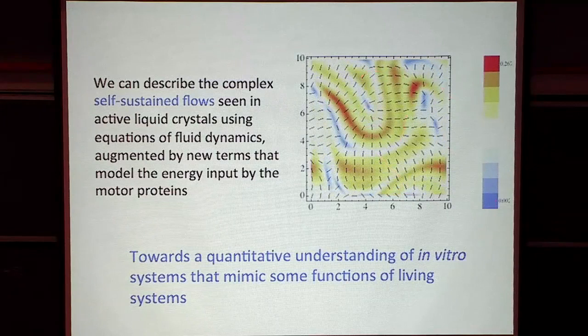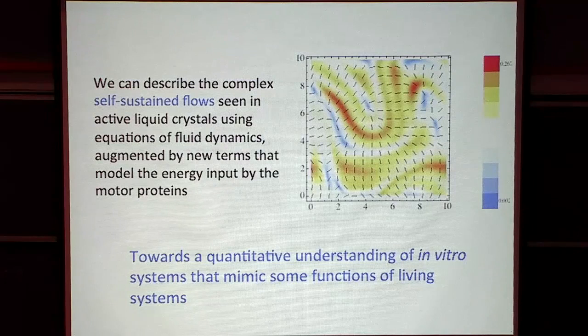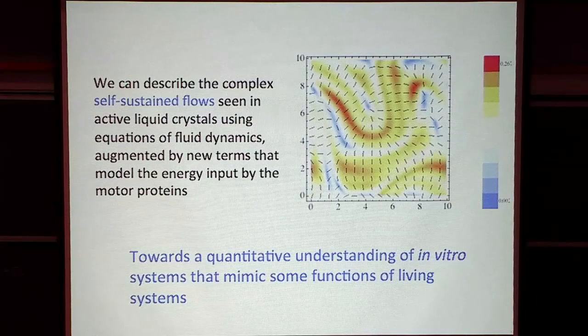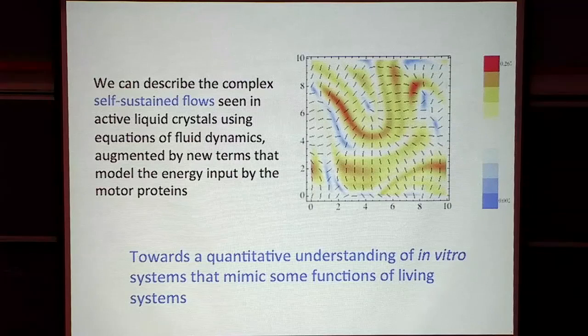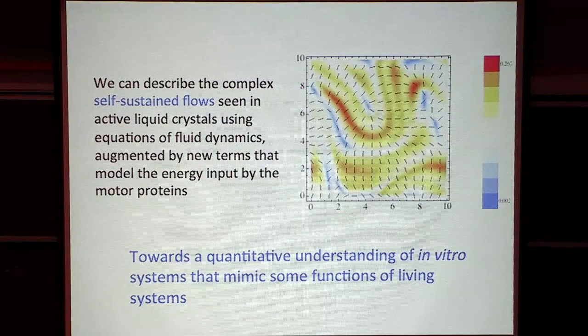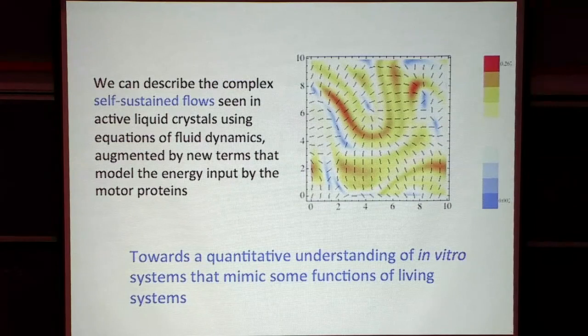Why are we doing this? The experiment and this kind of theoretical work is trying to get a quantitative understanding of things that characterize living systems — such as spontaneous motion. By combining experimental and theoretical studies, we are trying to take apart the cell and reproduce some of what it does in vitro. If we do it in this controlled way, we might provide theoretical quantitative understanding of what's happening. The long-term hope is that we might eventually learn from these systems to build new materials that mimic living systems.